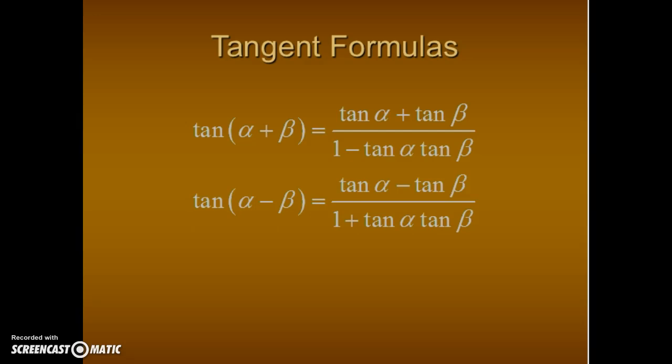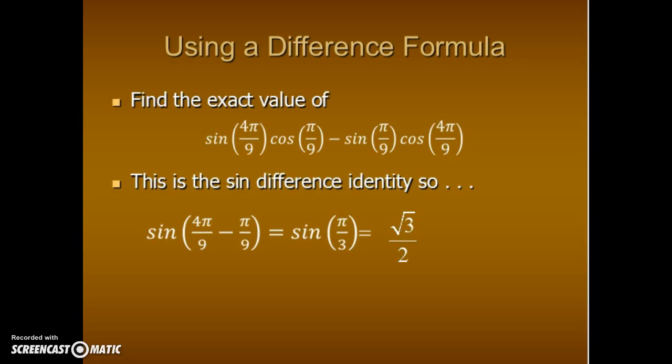For now, put those in your notes — we're going to work a couple of examples so you can see what they're talking about. The first example asks us to find the exact value of sine of 4π over 9 times cosine of π over 9 minus sine of π over 9 times cosine of 4π over 9.